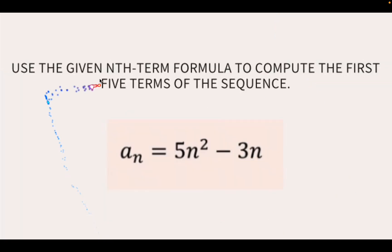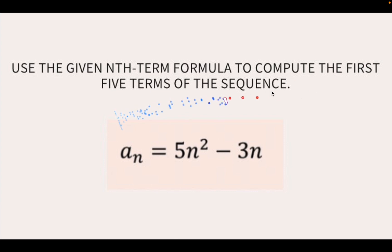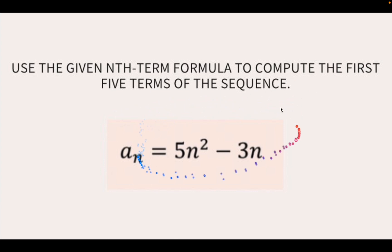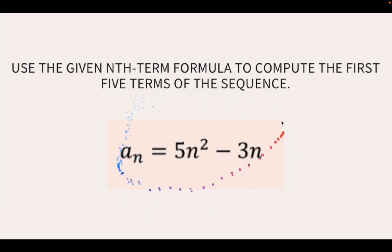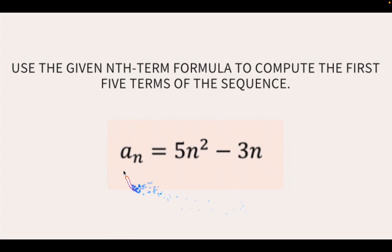Use the given n-term formula to compute the first five terms of the sequence. The formula to compute the first five terms is a sub n equals 5n squared minus 3n.